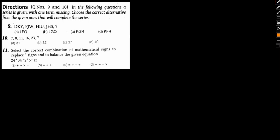Questions 9 and 10: In the following questions a series is given with one missing term. Choose the correct alternative from the given ones that will complete the series. We have a series here. Let's start with number 9 first. So we have D, K, Y, F, J, W, H, I, U and J, H, S. We have to observe a certain pattern.